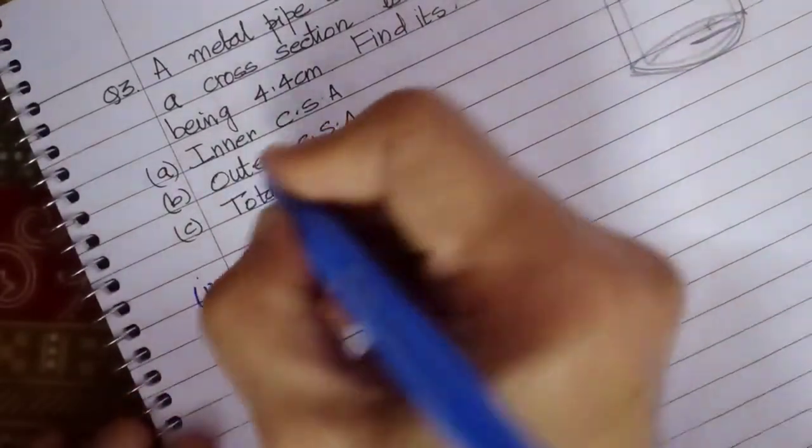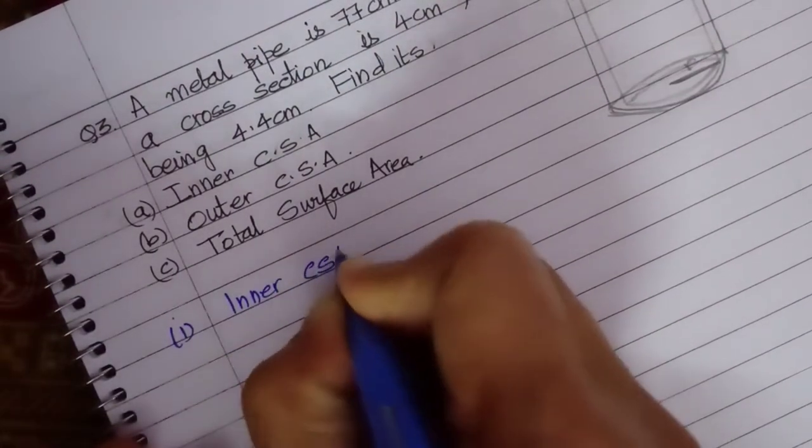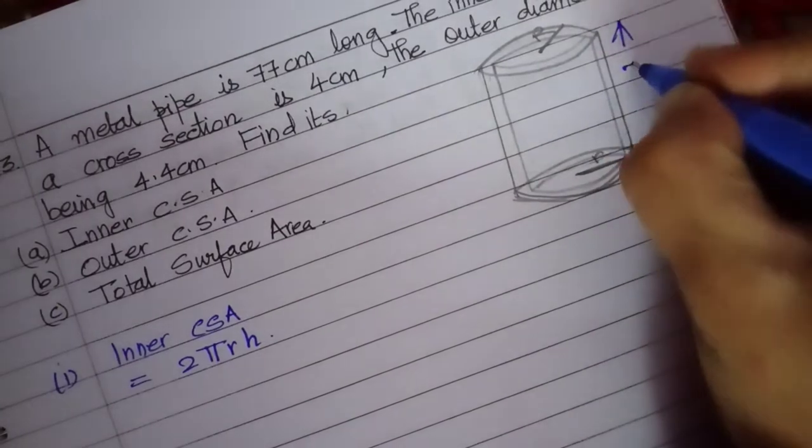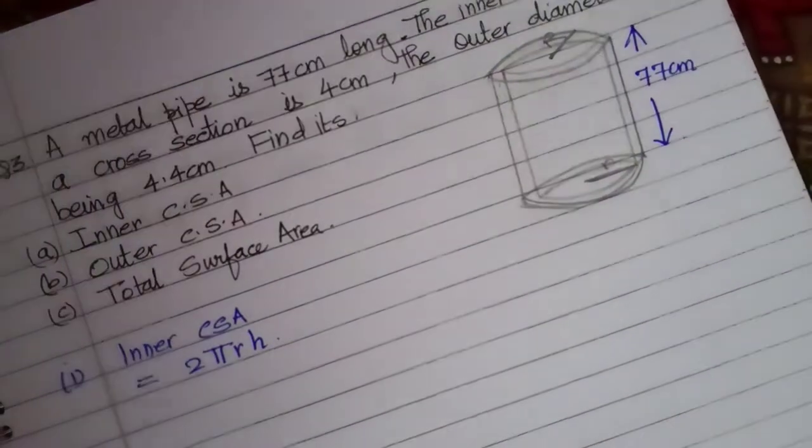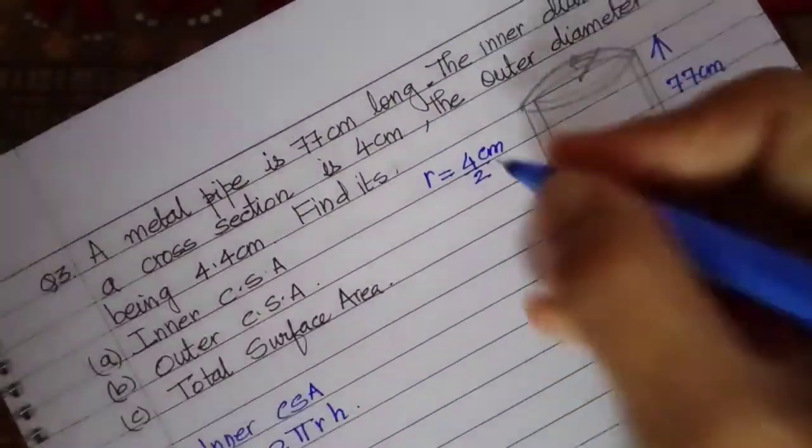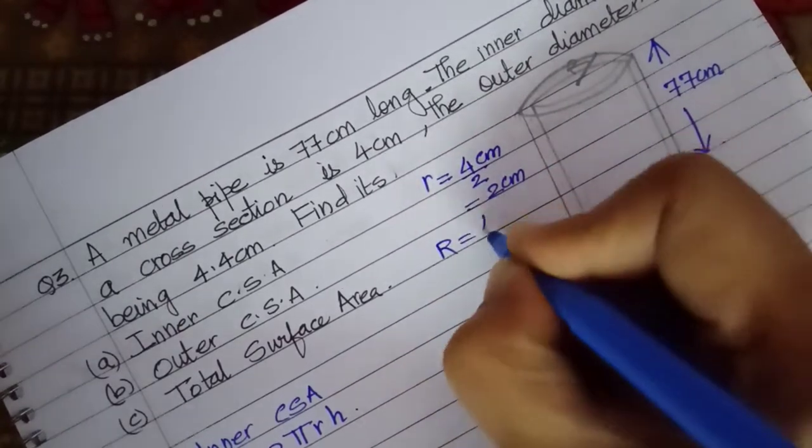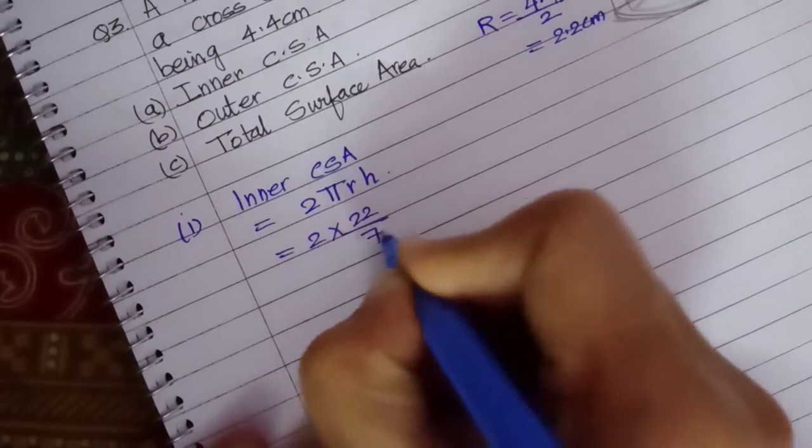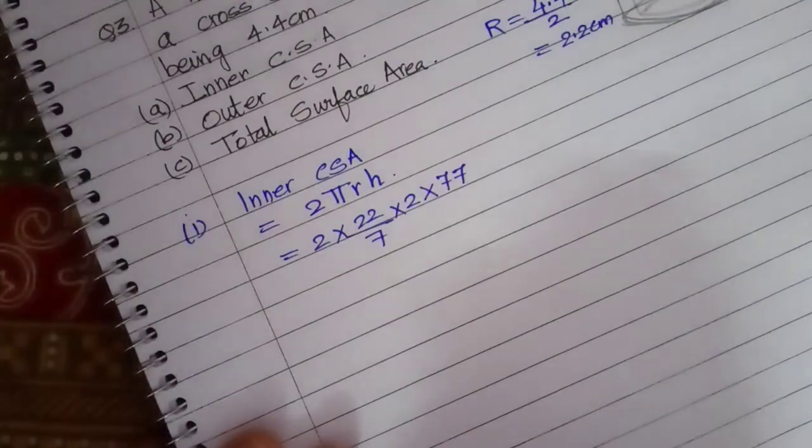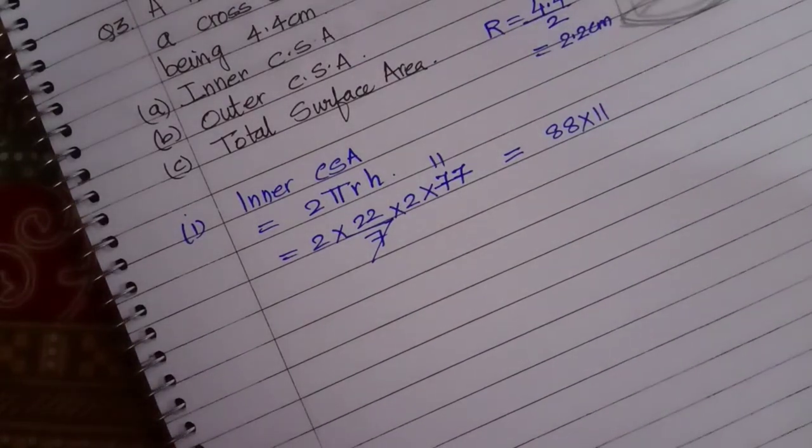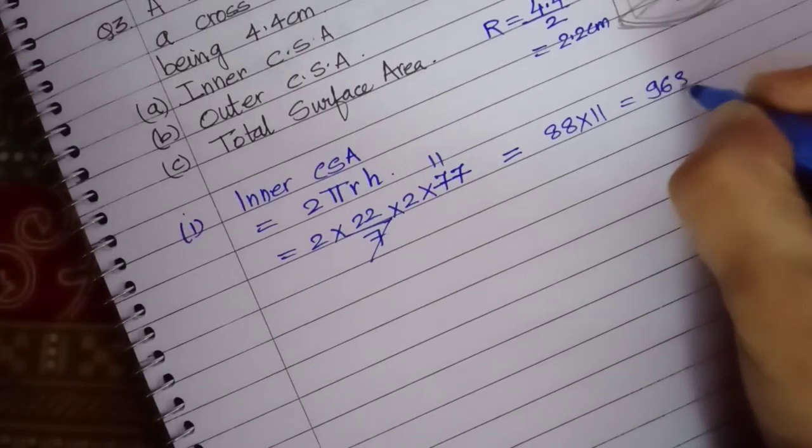First part: Inner curved surface area. That is 2πrH. It is given this metal pipe has got height 77. R is given as 4 centimeters, 4 by 2, because the inner diameter is 4. So radius is 4 by 2, that is 2 centimeter. The outside radius is 4.4 by 2, because the outer diameter is 4.4. So that is 2.2 centimeter. So 2 into 22 by 7 into 2 into H is 77. 7 elevens, I get it as 88 into 11. 968 centimeter square.